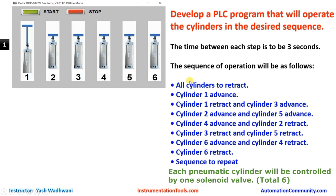Now let us understand our desired sequence. As soon as the start button is pressed, first of all cylinder one should advance. As you can see, in this first step all the cylinders are in retract position and cylinder one is in the advanced position — it has moved from here to here. In the second step, after three seconds, cylinder one should retract and cylinder three should advance.